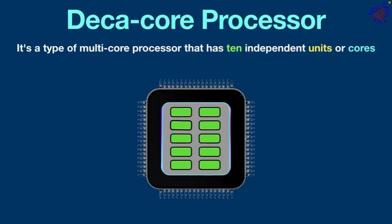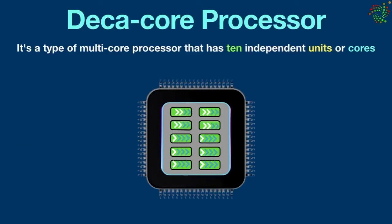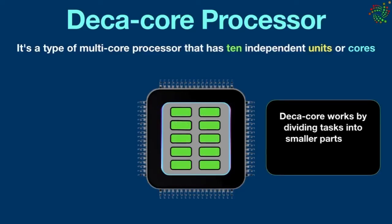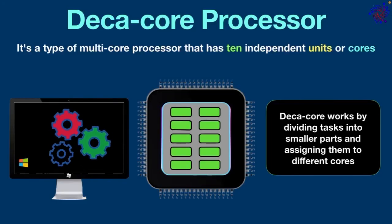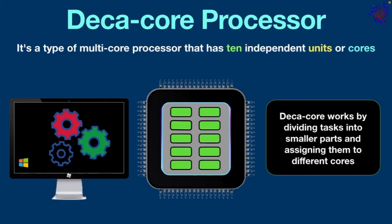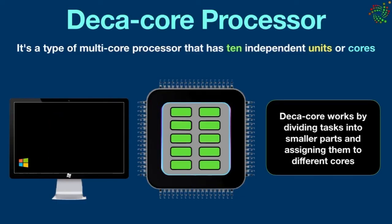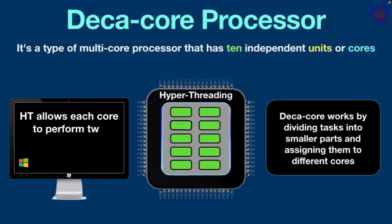Each core is capable of performing tasks separately, and 10 cores work together to perform operations more efficiently than other CPUs developed until now. With more cores, the processor can handle more tasks at once, making the system run faster and smoothly. Deca core works by dividing tasks into smaller parts and assigning them to different cores. For example, if you are running multiple applications at the same time, the processor assigns each application to a different core, so the system can handle multiple applications simultaneously without slowing down. Deca core processors feature hyper-threading technology, which allows each core to perform two threads at the same time.